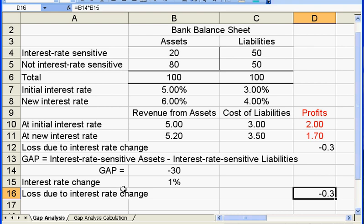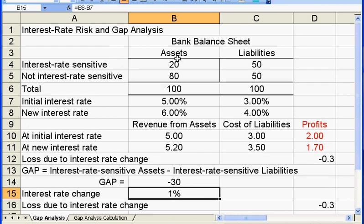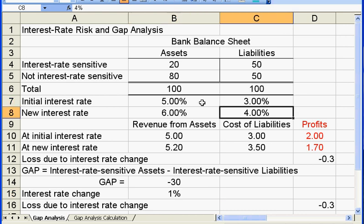The reason why I can do this simplified calculation is because I assume it's the same 1% increase in the interest rate on both the liability side and the asset side: 3 to 4% here, and 5 to 6% on the asset side.